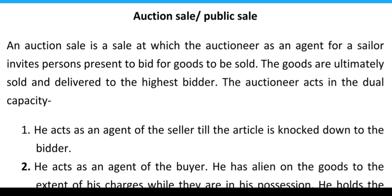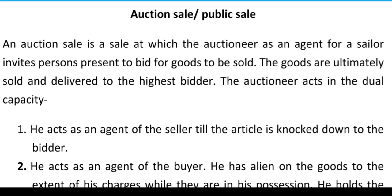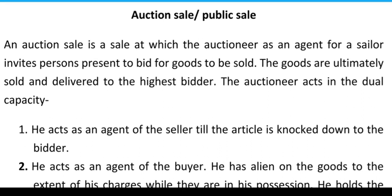Similar to an ordinary sale, in an auction the sale can be performed either by the seller himself or through an agent engaged by him, and that person is called an auctioneer. The rule for determining the winning bidder may also differ on different occasions. An auction sale is one at which an auctioneer as an agent of the seller invites persons present to bid for goods to be sold, and the goods are ultimately sold and delivered to the highest bidder. The auctioneer works in a dual capacity.